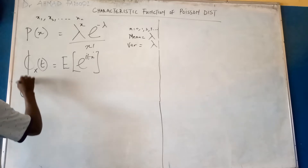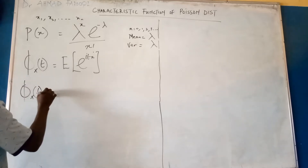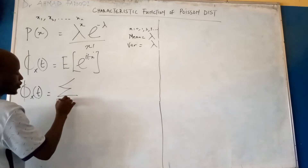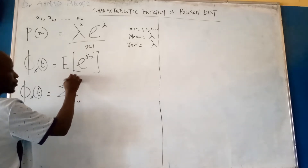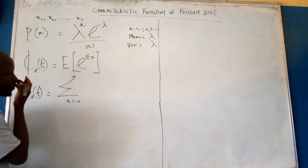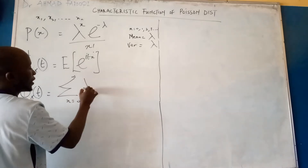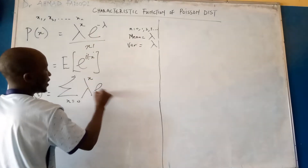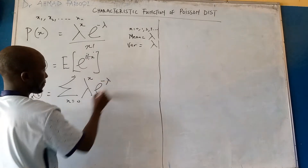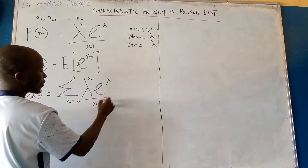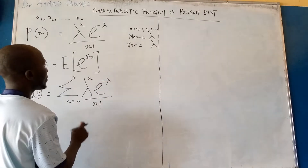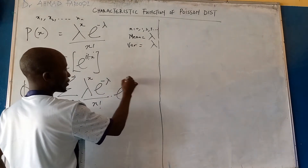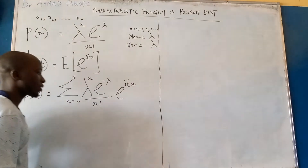This analysis will give us phi x of t equals the summation with x running from zero to positive infinity of lambda to the power x, times exponential minus lambda, divided by x factorial, multiplied by exponential i t x.